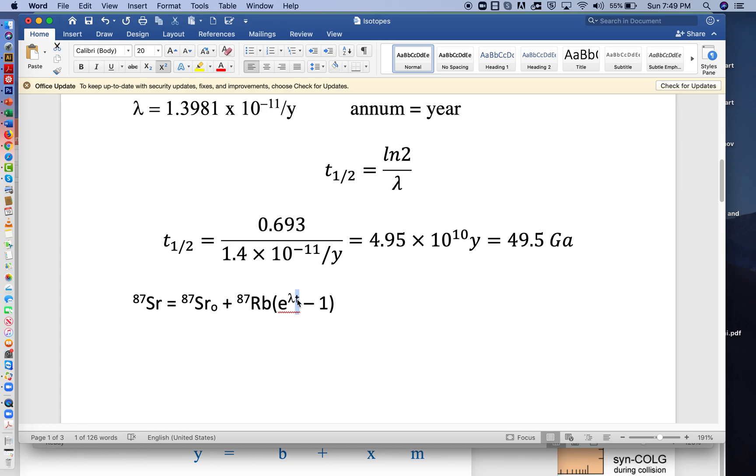If this is zero, the entire exponent becomes zero, and e to the zero is one. You might remember from algebra that any number raised to the zeroth power is one. If this whole thing is one, one minus one is zero, and this term drops out, so it doesn't change. For ingrowth of strontium-87, we need a non-zero amount of rubidium-87, and some time must elapse. After that time, we'll have some larger value.